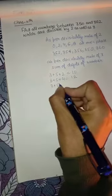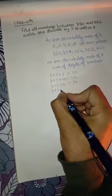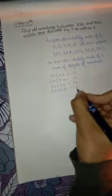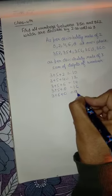3 plus 5 plus 6 equals 14. 3 plus 5 plus 8 equals 16. 3 plus 6 plus 0 equals 9.